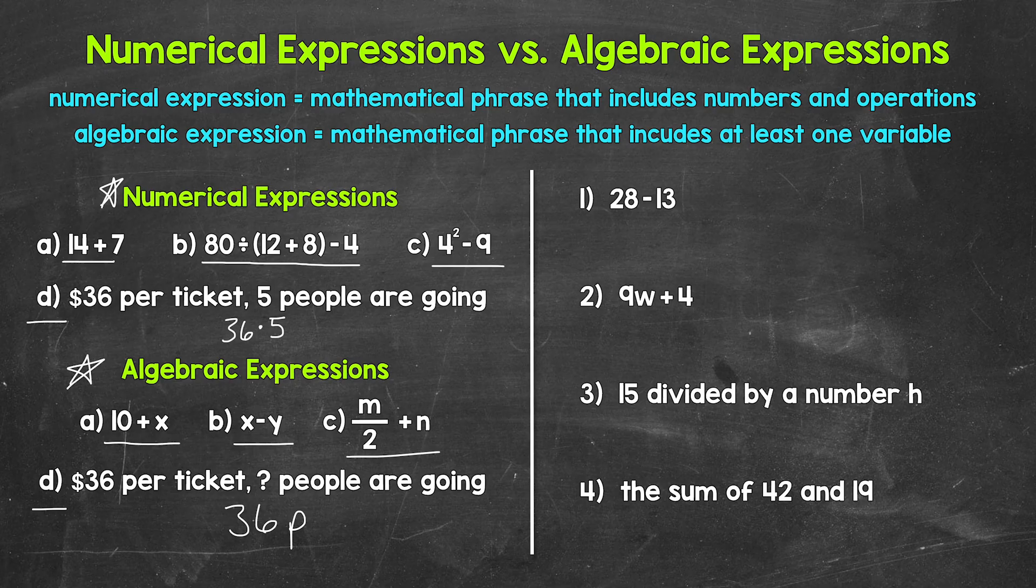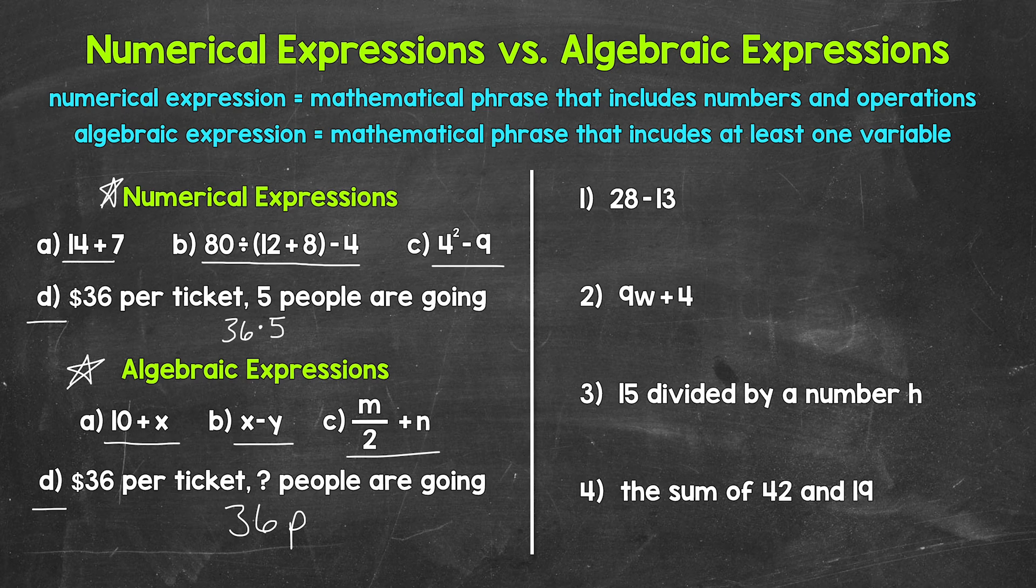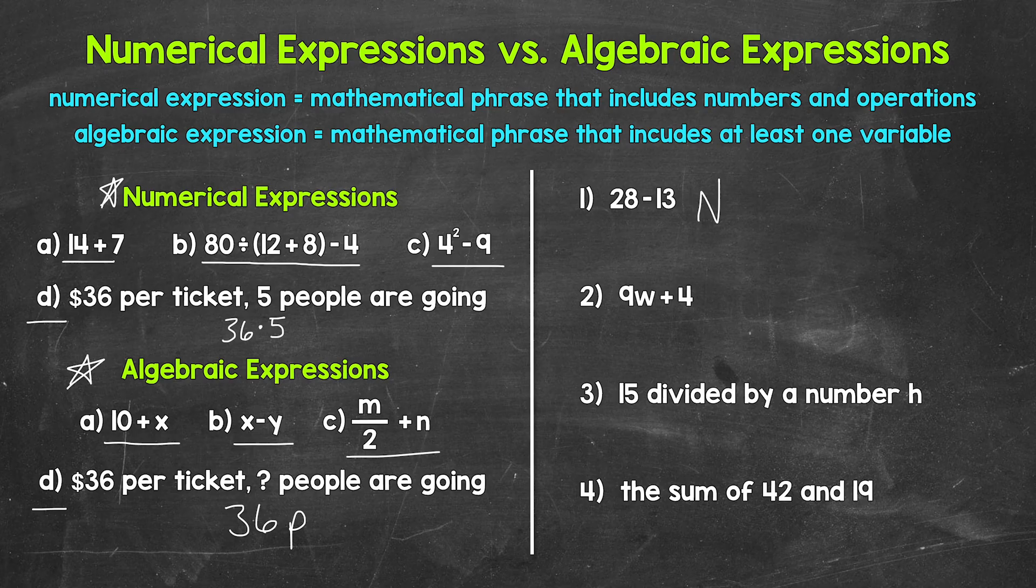Remember, when a number is next to a variable, that represents multiplication. And then once we have a value for P, we can plug that in. So those are the basics of numerical expressions and algebraic expressions. Let's move on to numbers 1 through 4, and we need to determine if the expression is numerical or algebraic. For number 1, we have 28 minus 13. That's numerical, so let's write down an N next to it. Moving on to number 2, we have 9w plus 4. We have a variable there within that expression, w. So this is algebraic. So let's put an A for number 2.